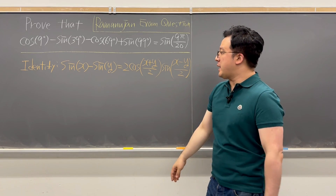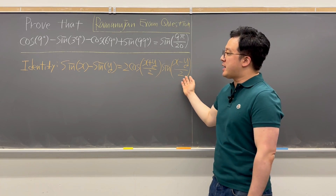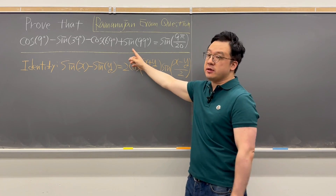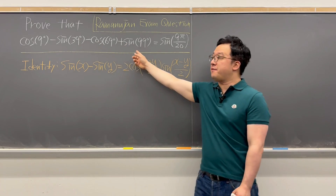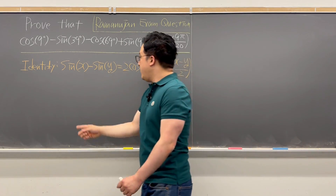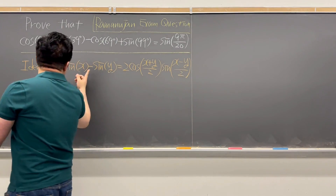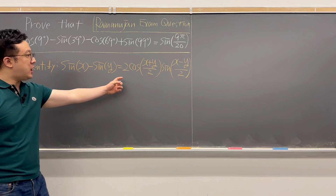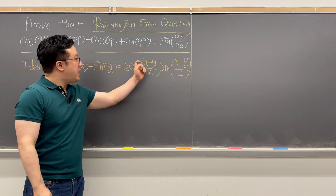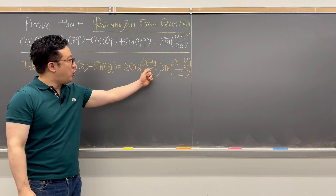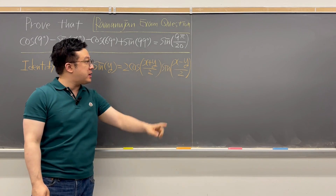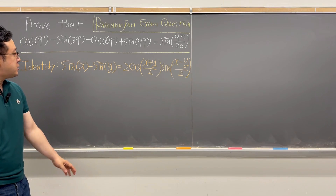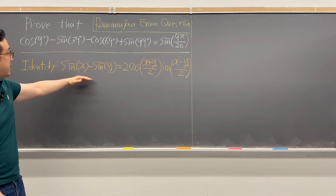For this question, I already wrote down the identity that we'll be using, especially on the left-hand side of the equation. The identity is: sine x minus sine y equals 2 times cosine((x+y)/2) times sine((x-y)/2). Using this identity, let's work on the left-hand side.